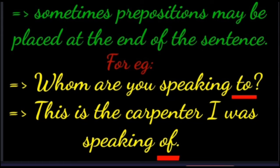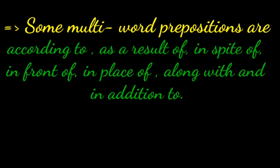Sometimes prepositions may be placed at the end of the sentence. For example: Whom are you speaking to? This is the carpenter I was speaking of. Prepositions may be a single word or a group of words. Some multi-word prepositions are: according to, as a result of, in spite of, in front of, in place of, along with, and in addition to.